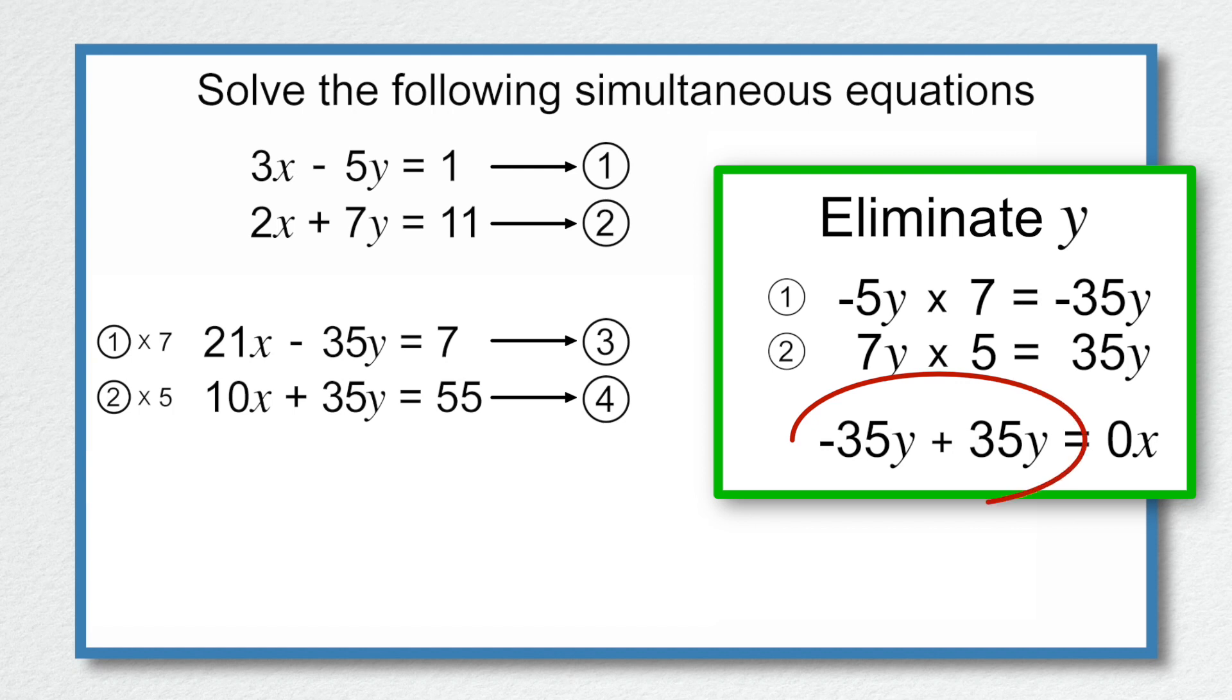We are now going to add equations 3 and 4 together to eliminate y. 21x add 10x is equal to 31x. Minus 35y add 35y is of course 0. 7 add 55 is equal to 62. So we are left with 31x is equal to 62, which gives us x is equal to 2.